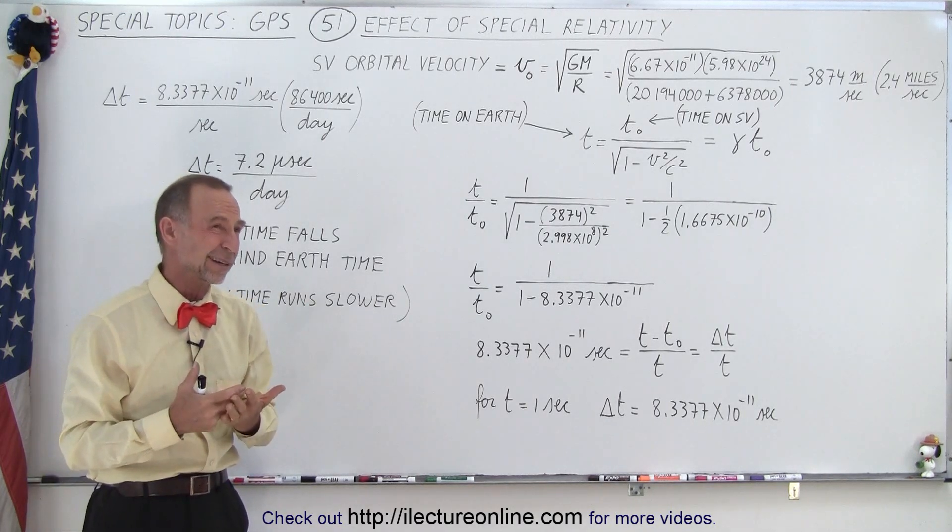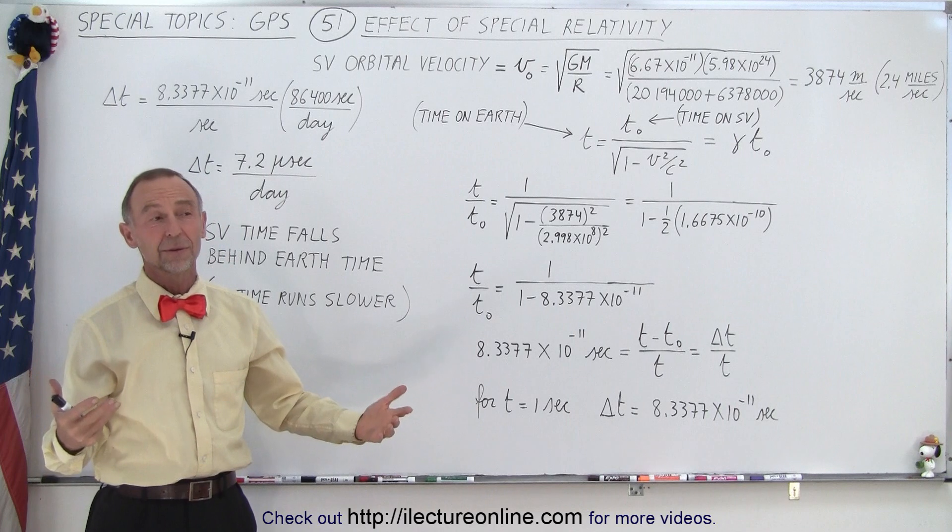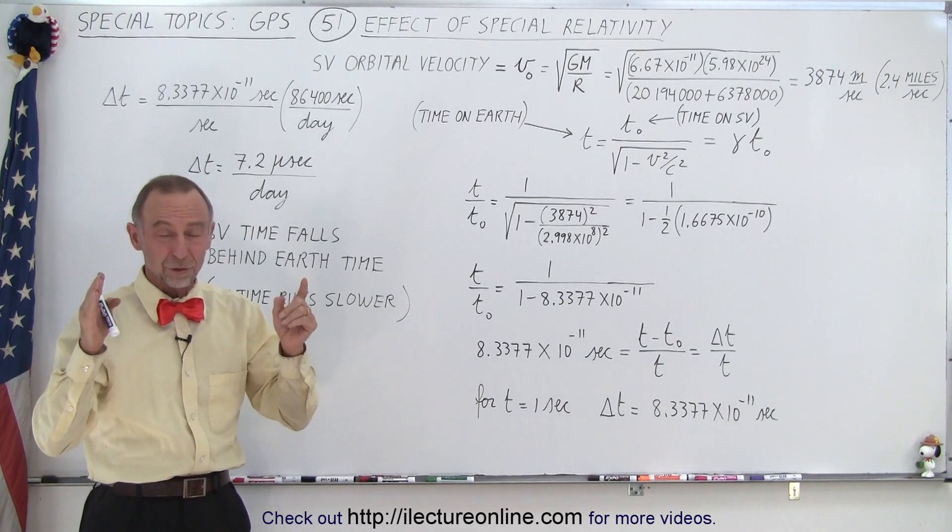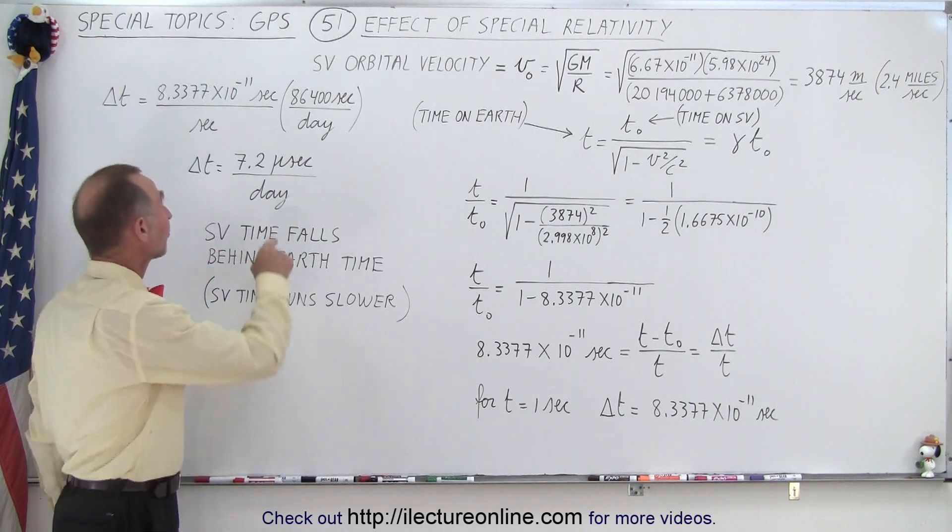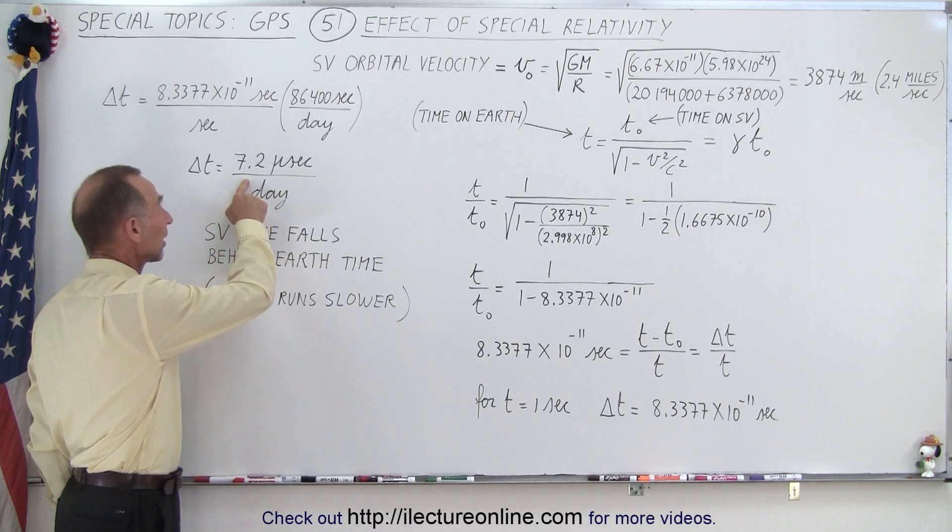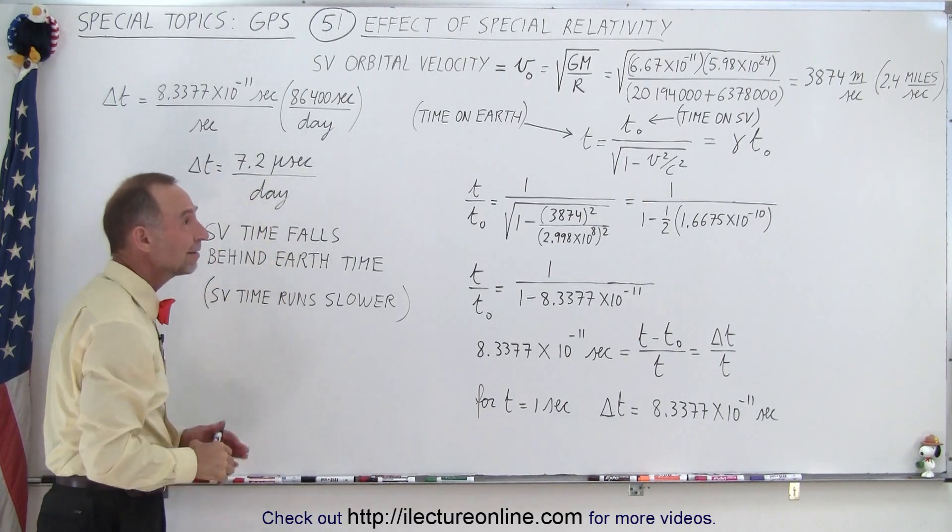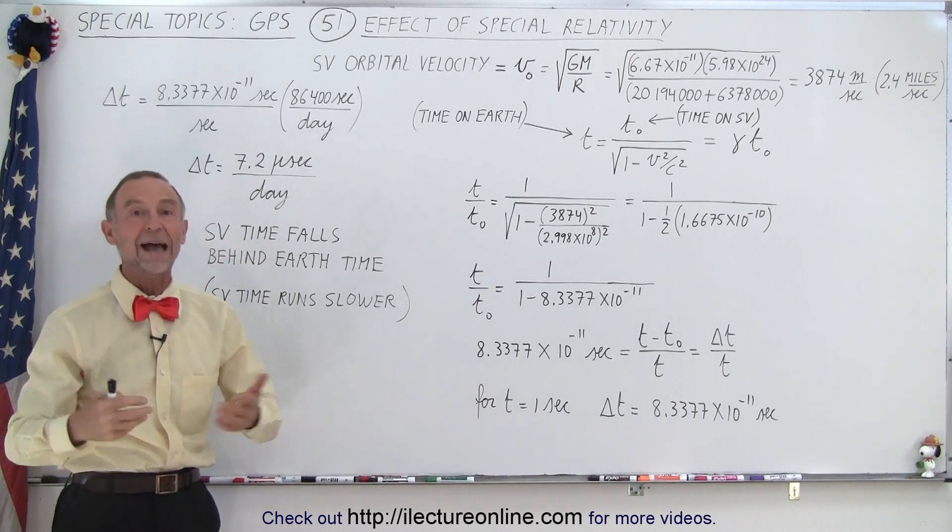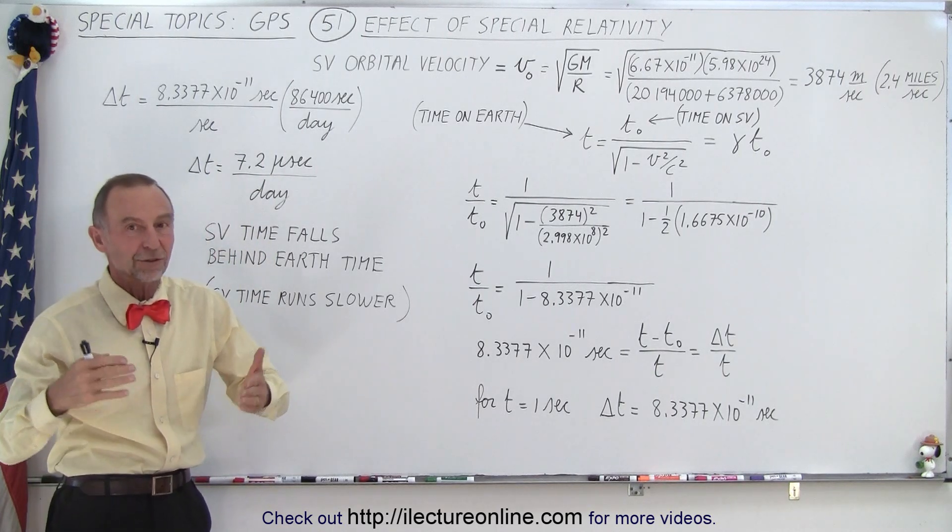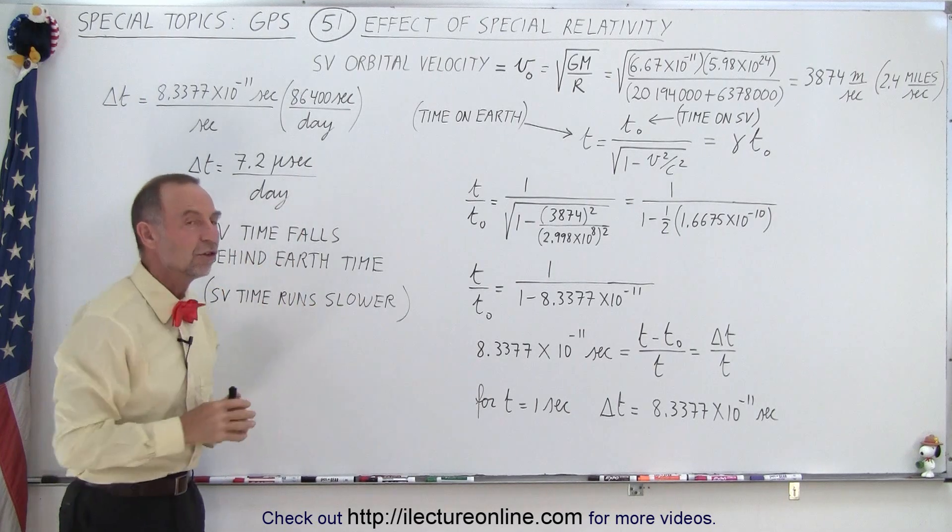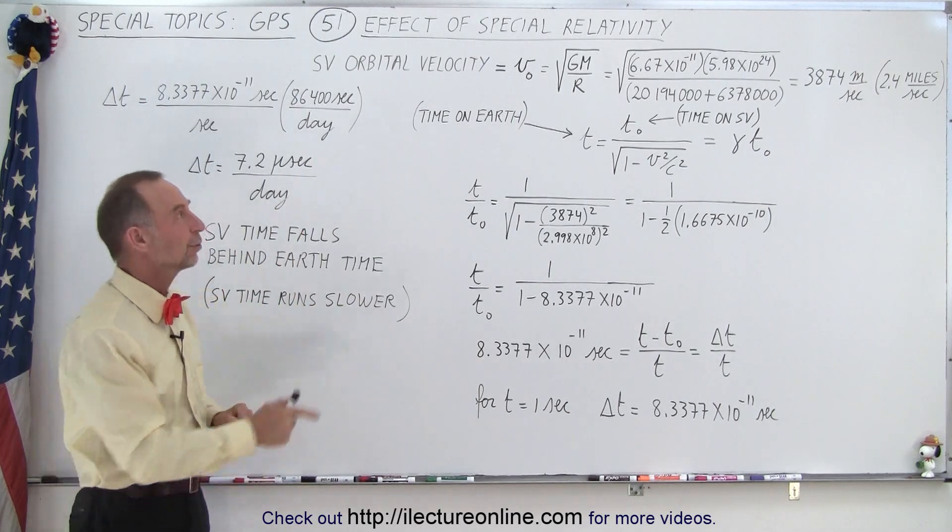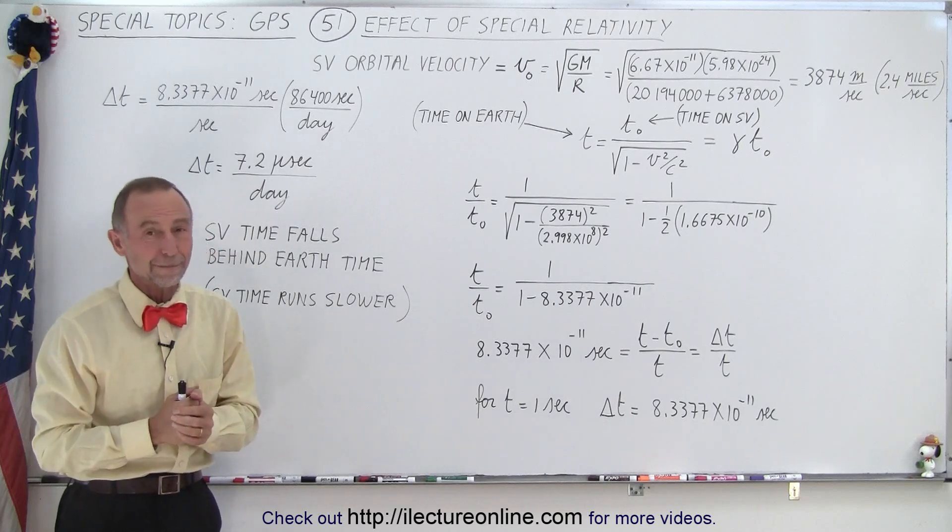You may say, 7.2 microseconds, is that a lot? Since light travels 30 centimeters or one foot every nanosecond, that's 300 feet per microsecond, so that's 2,100 feet. That is almost a half a mile, maybe 600, 700 meters per day, that the time would cause the reading of the GPS to be off, simply due to the effect of special relativity.